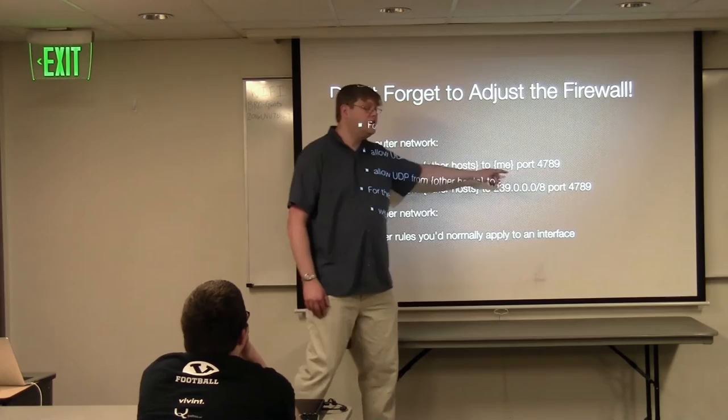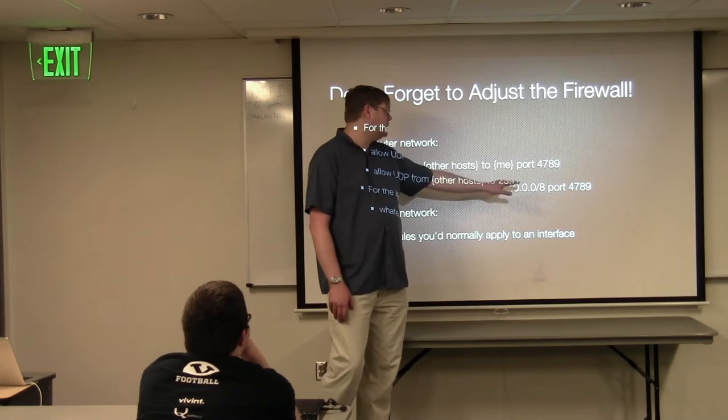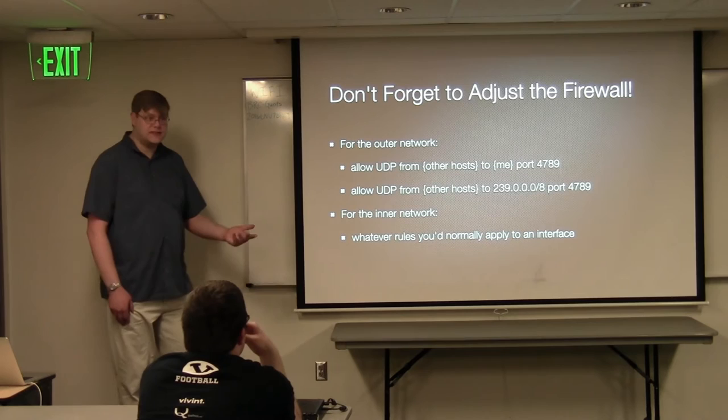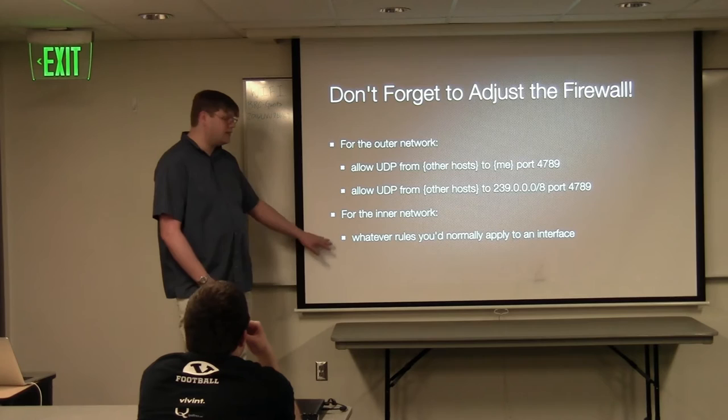You also need to allow UDP to your multicast groups on port 4789. I'm using the 239.8.x.x range in my examples. If you want to allow the whole multicast range, you can do 224.0.0.0/4. But if you're setting this up, you should know what multicast address ranges you're using. The inner network is up to you — it's just another Ethernet-like interface. You can block stuff on it or not.